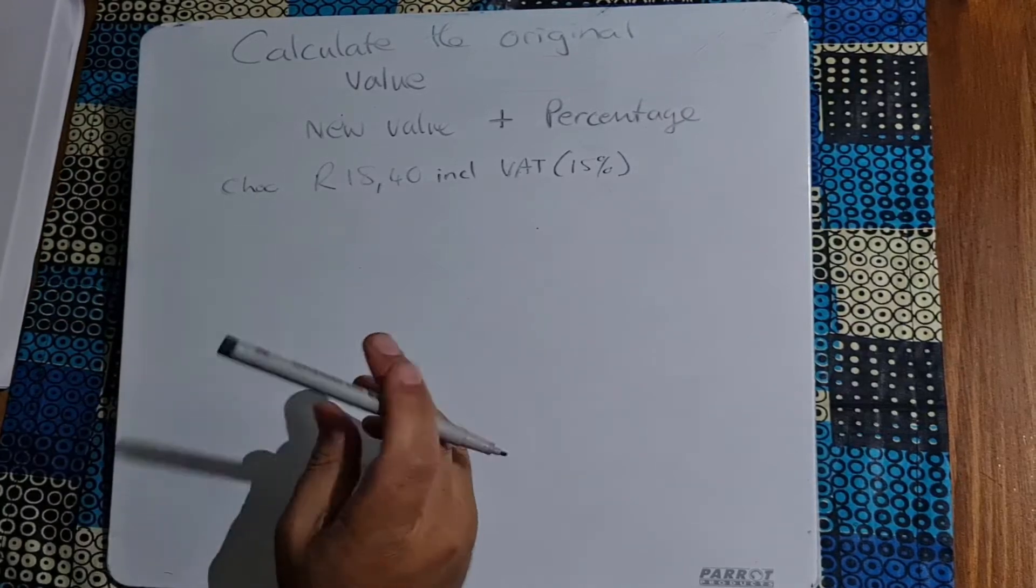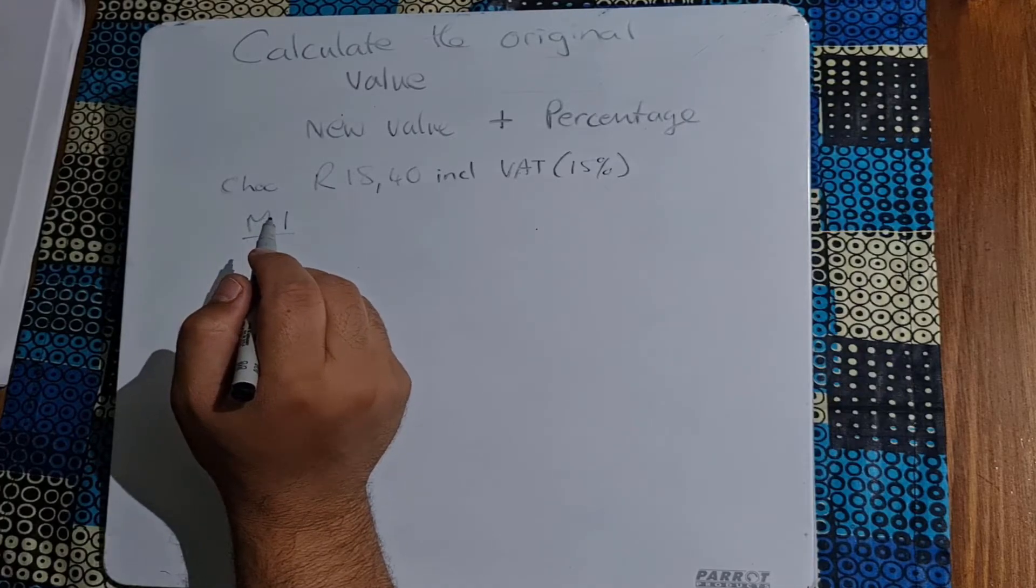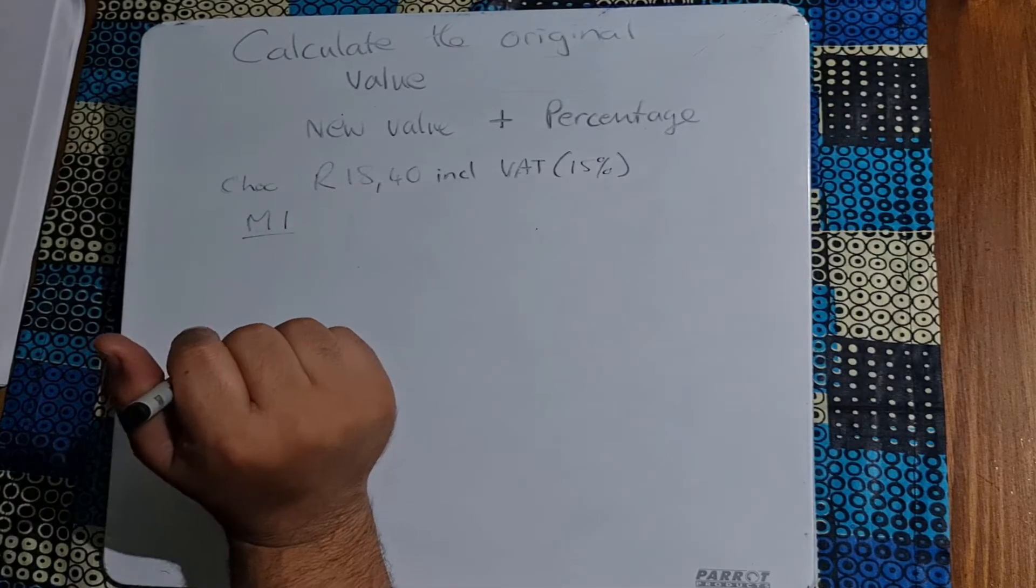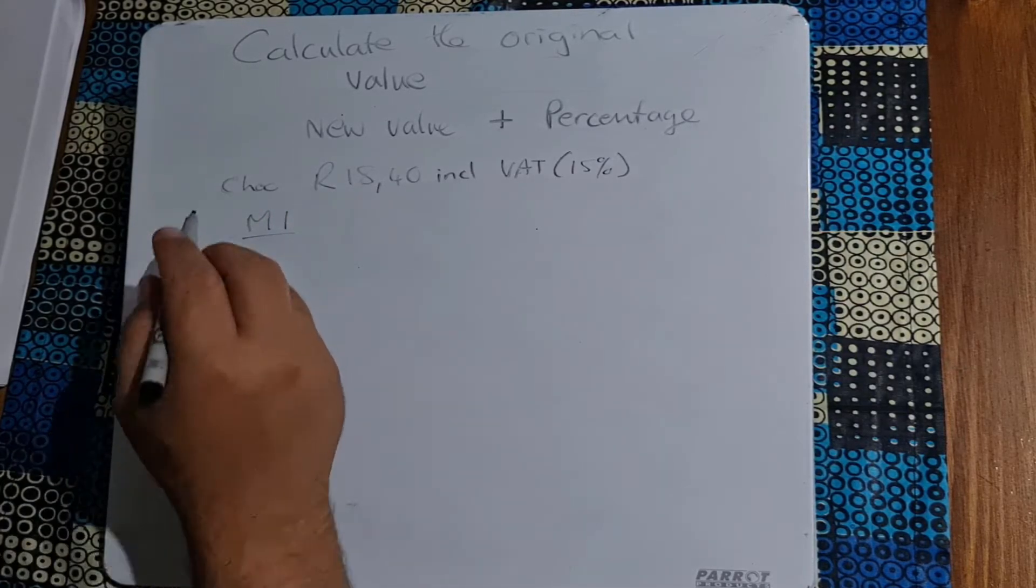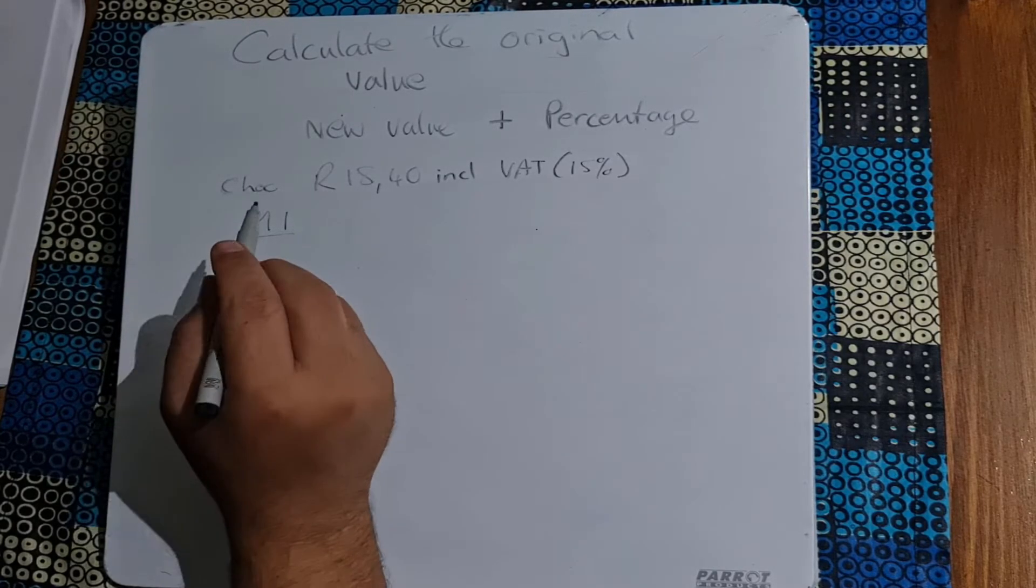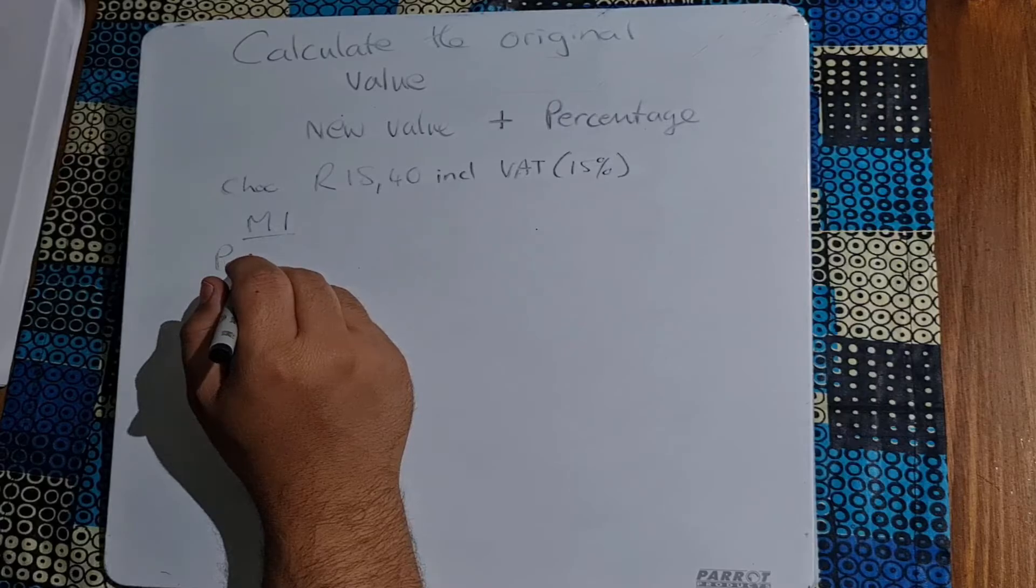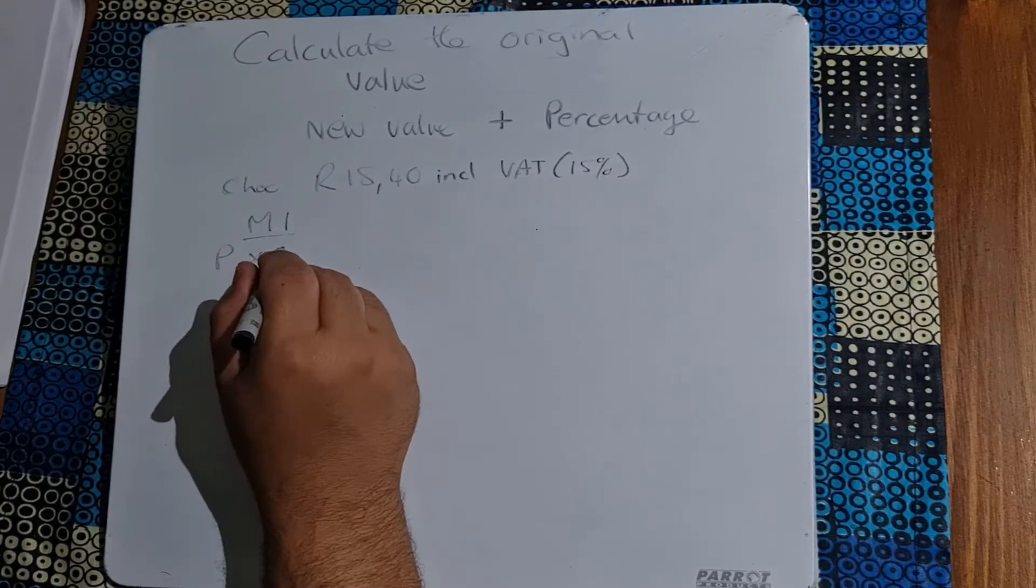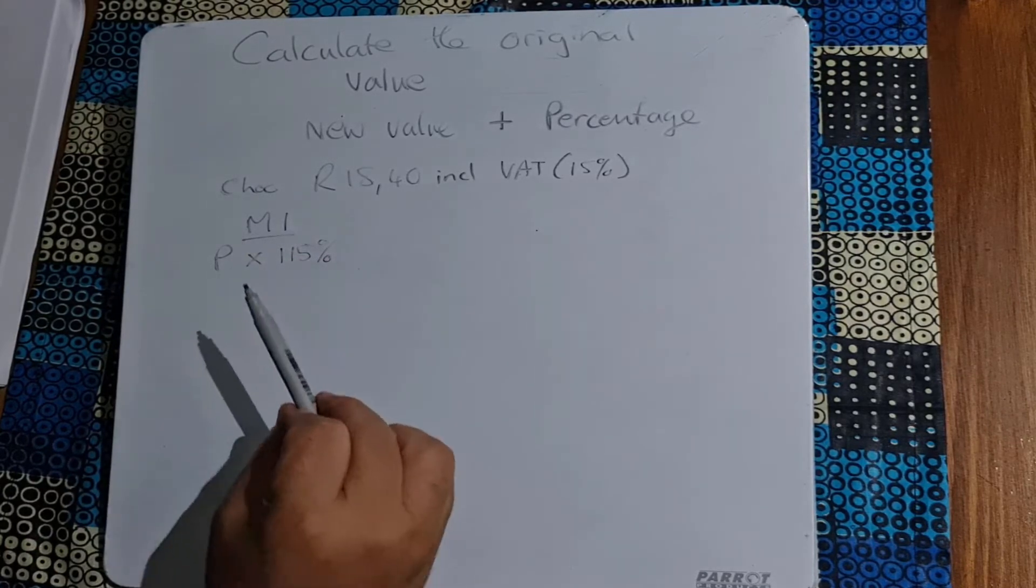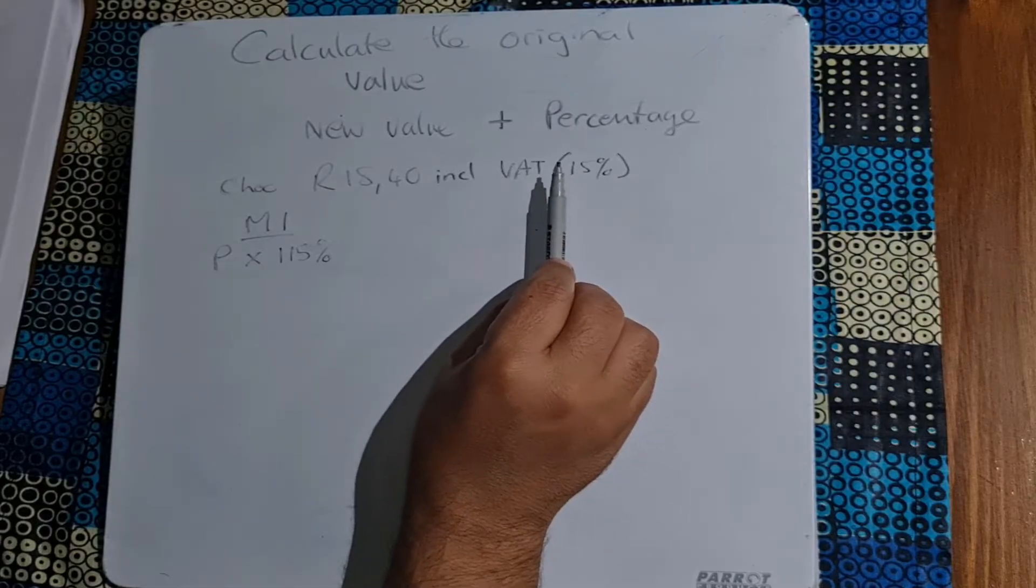We have two methods that we are going to use. With method number one, we are basically going to say we're looking at our price, our price excluding VAT, that is going to be represented by P. So I'm going to say P and multiply P by 115%, because the 100 represents that value and the 15 represents the VAT.